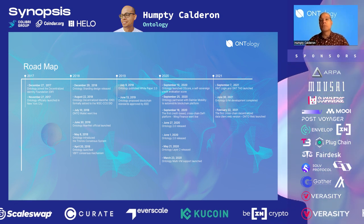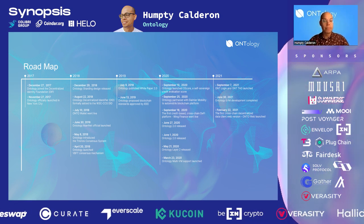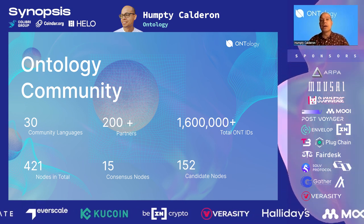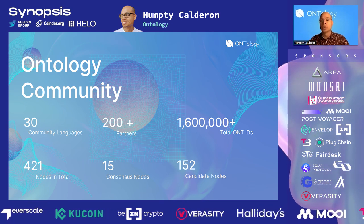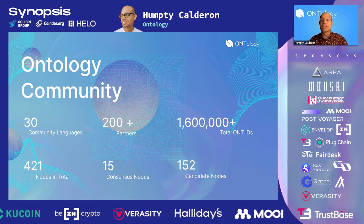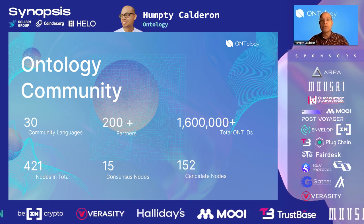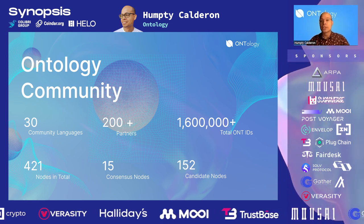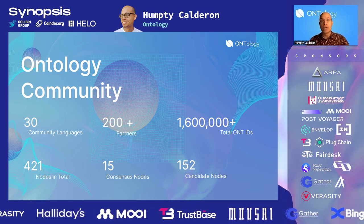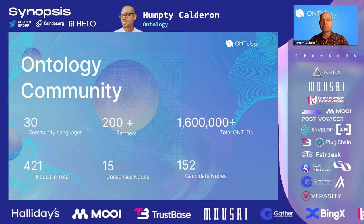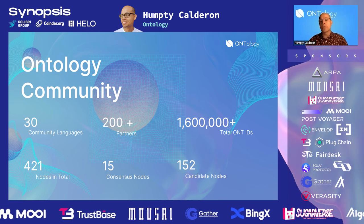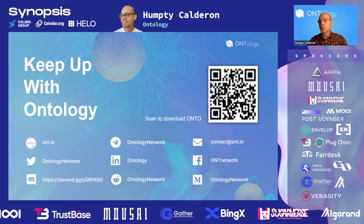Ontology keeps building towards the future of Web3. We have a pretty large community consisting of ambassadors from across the world with over 30 languages supported, 200 plus partners, and 1.6 million Ont IDs created — which is a very meaningful metric, meaning we are able to generate all of these identities across multiple blockchains, supported by nodes that protect the security of the network. If anybody's interested in learning more about Ontology, I invite you to please visit us on our website, ont.io, or join our community channels.